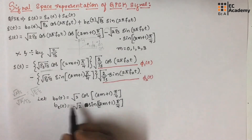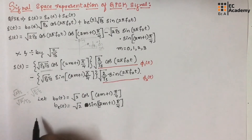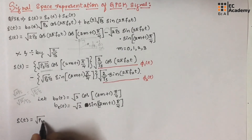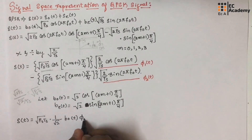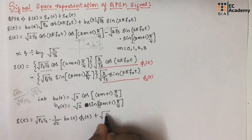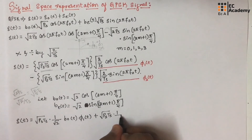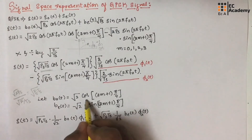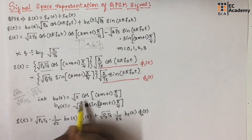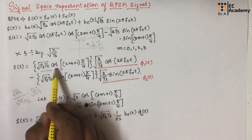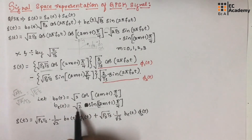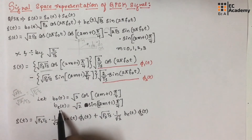Let us take φ₁, φ₂, B₀, and B₁(t), and substitute into the above equation. We can write the equation as S(t) = √(Ps·Ts)·(1/√2)·B₀(t)·φ₁(t) + √(Ps·Ts)·(1/√2)·B₁(t)·φ₂(t). From the expression, cos((2m+1)π/4) has been written as (1/√2)·B₀(t), and similarly −sin((2m+1)π/4) = (1/√2)·B₁(t).